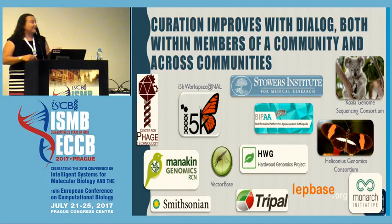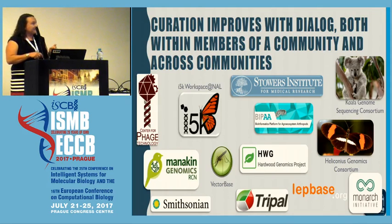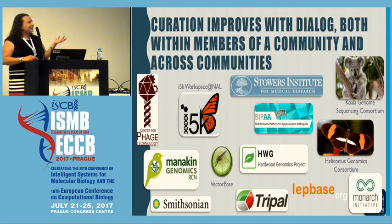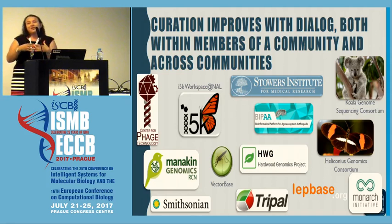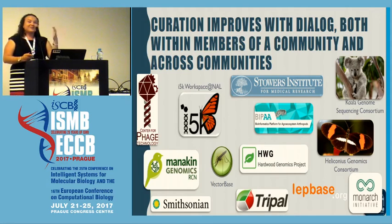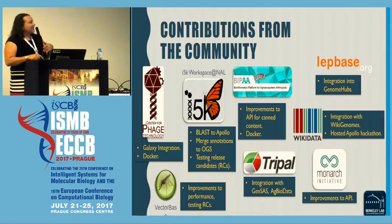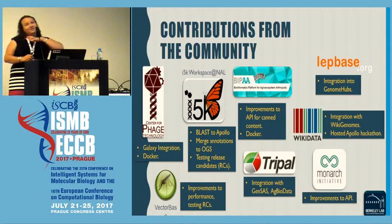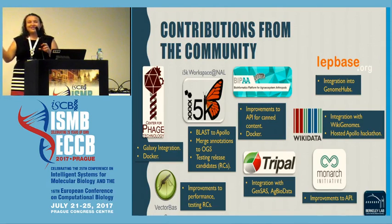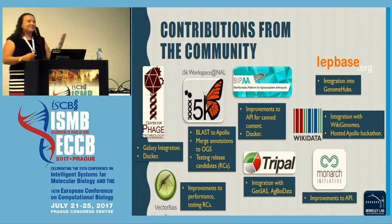I've highlighted some of the communities we are working with, like the Center for Phage Technology at Texas A&M University, the Bioinformatics Platform for Agroecosystems Arthropods, as well as several other institutions. Many of these institutions have begun to contribute back — in addition to hosting Apollo instances and doing curation together, they've started contributing technical inputs to our project. For instance, the i5k workspace at the National Agricultural Library has been contributing to our repository to improve the BLAST interface to enter Apollo, as well as working on merging manual annotations with predicted genes to create an official gene set.